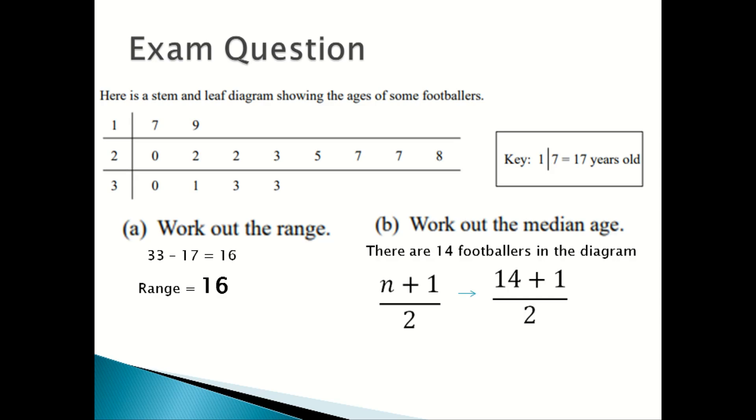Obviously, you can't use 7.5, so you round up to the next whole number, which is 8. So you select the 8th number in the diagram, and the 8th number is 27. So the median age is 27 years old.